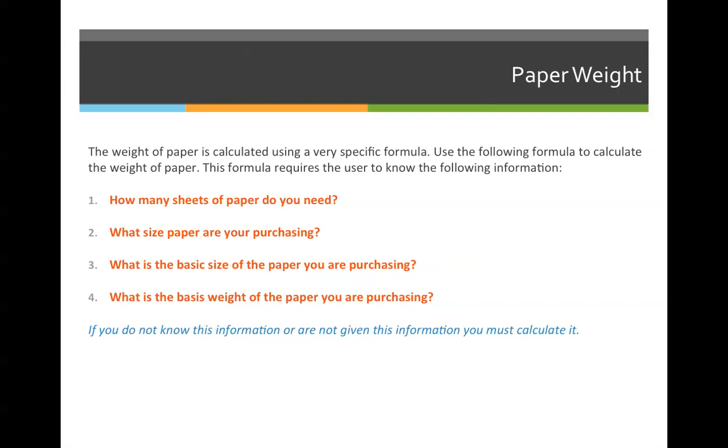One, how many sheets of paper do you need to buy? Two, what size paper are you purchasing? Three, what is the basic size of the paper you're purchasing? So you're going to grab that off of that chart that you should have created a couple slides ago. And five, what is the basis weight of the paper you're purchasing? 20 pound, 80 pound, 100 pound, whatever it happens to be.